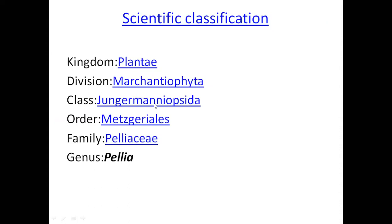The class within Marchantiophyta is Jungermanniopsida. The first class taken is Hepaticopsida. Hepaticopsida's sub-classes are three classes which we have to discuss: Hepaticopsida, Anthocerotopsida, and Bryopsida.